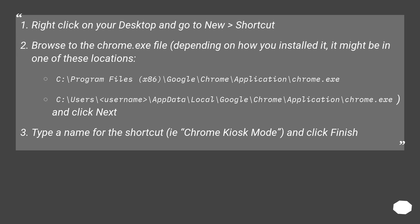Right-click on your desktop and go to New > Shortcut. Browse to the chrome.exe file — depending on how you installed it, it might be in one of these locations: C:\Program Files\x86\Google\Chrome\Application\chrome.exe, or C:\Users\username\AppData\Local\Google\Chrome\Application\chrome.exe, and click Next. Type a name for the shortcut, e.g. 'Chrome Kiosk Mode', and click Finish.